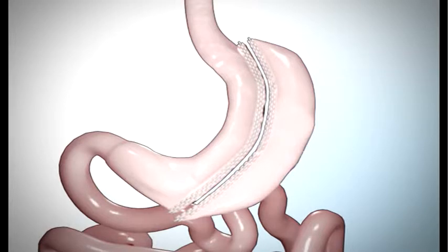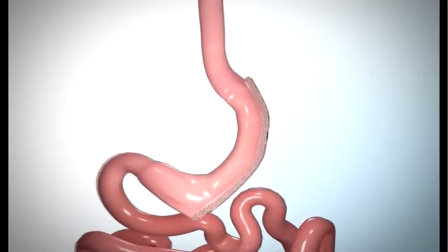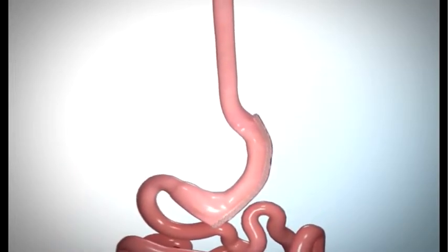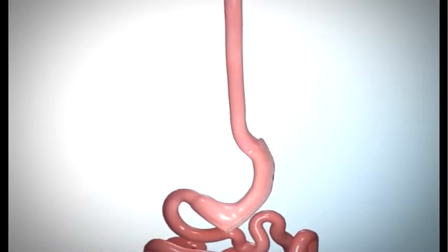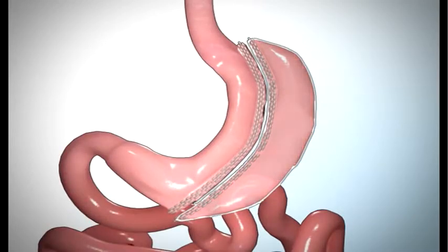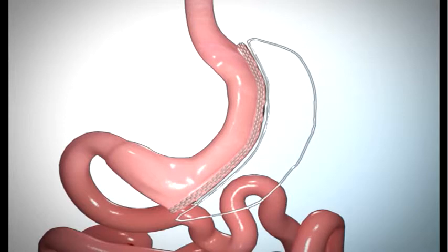The third step in the sleeve gastrectomy is removing part of the stomach. Your surgeon will remove the left part of the stomach, which includes the fundus. The fundus is one of the areas of the stomach that produces the hormone that controls your appetite.